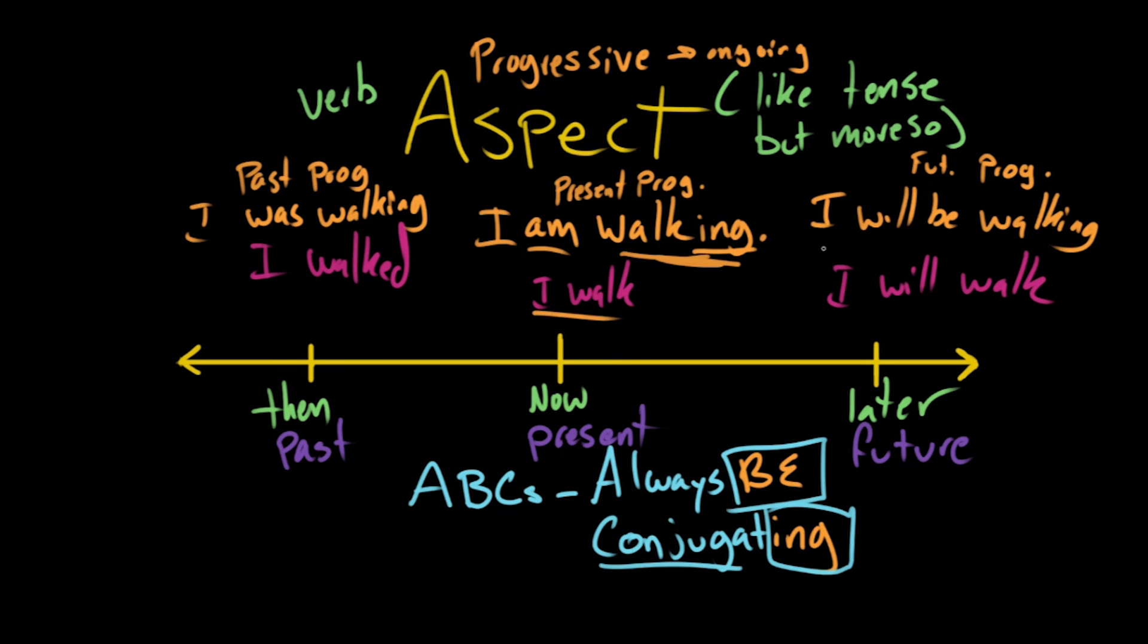So no matter whether or not it's happening in the past, it's still I was walking. The part that changes is the be, is the verb to be. I was walking, I am walking, I will be walking. The part that doesn't change is the walking.